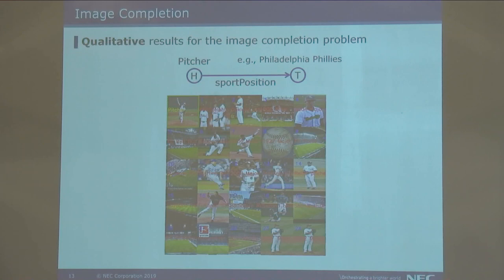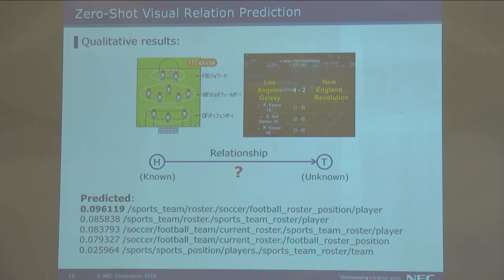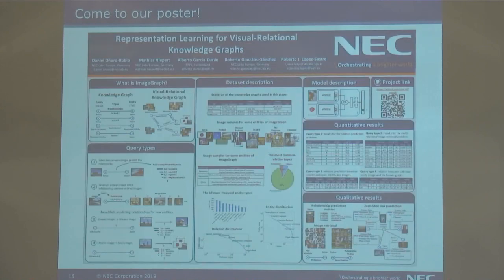Here you can see some qualitative results for image retrieval, where the input is a photo with a fixed start position, and our system retrieves different images related to baseball. Similarly, here is an example for zero-shot learning, where we have a known image from a known entity and input an unseen image from an unseen entity, and our system predicted it is related to 'roasting on the coaching,' which makes a lot of sense. For more questions, please come visit our poster.